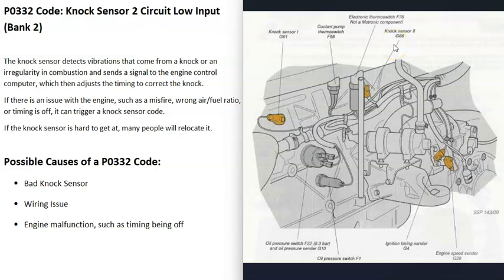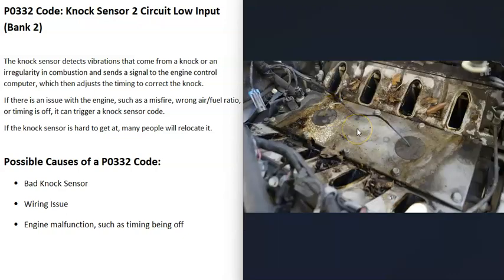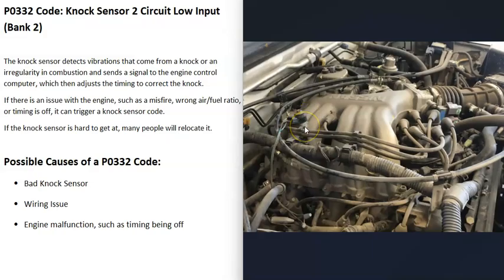One thing to note is that knock sensors are often located in very hard to get to spots, like underneath an intake manifold or on the side of the engine behind a starter. For this reason, a lot of people will buy a new sensor and relocate it up on top of the engine somewhere, then locate the wires going to the knock sensor and connect it.